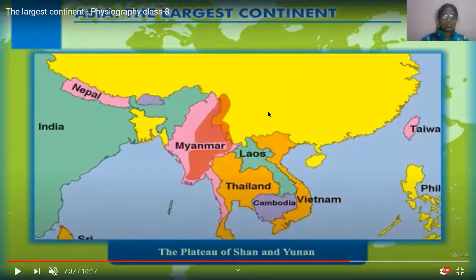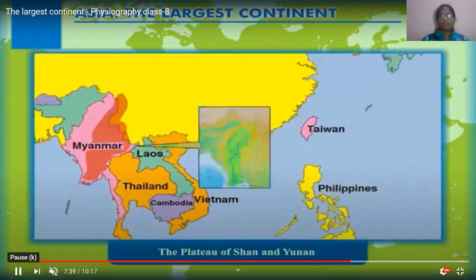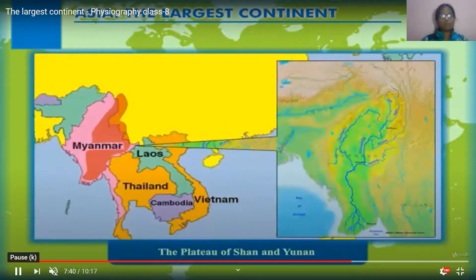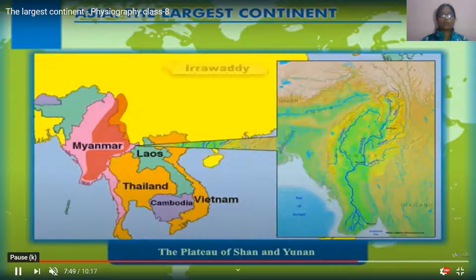Next one is the plateau of Shan and Yunnan. This plateau also has some rivers, and it is located partly in China.